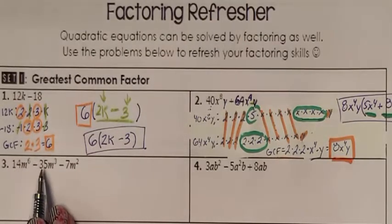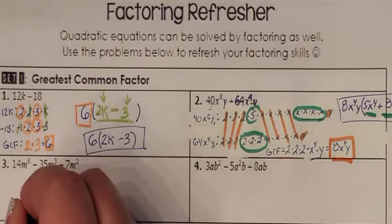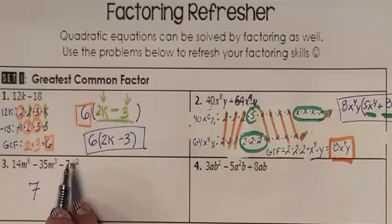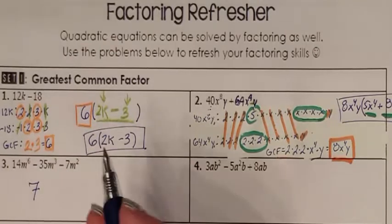14, negative 35, and negative 7. What do they all have in common? They all have the number 7 in common, because I can divide all of them by 7. Do they have any variables in common?